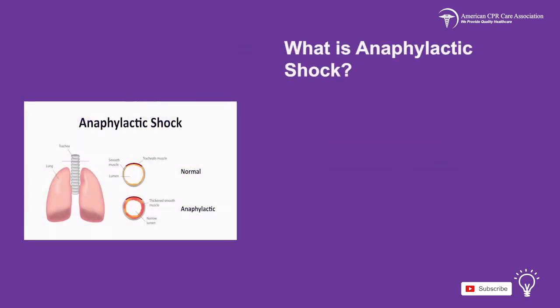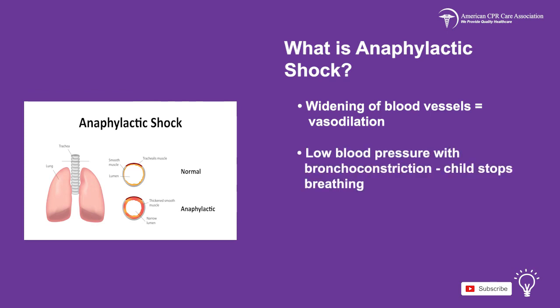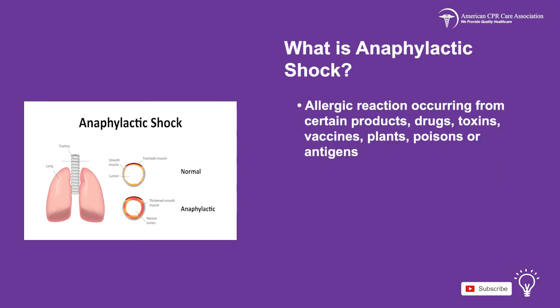The second form of distributive shock is anaphylactic shock. This results in vasodilation and low blood pressure with bronchoconstriction, which can cause the child to stop breathing immediately. Anaphylaxis is an allergic reaction that occurs in the presence of certain products, drugs, toxins, vaccines, plants, poisons, or antigens.